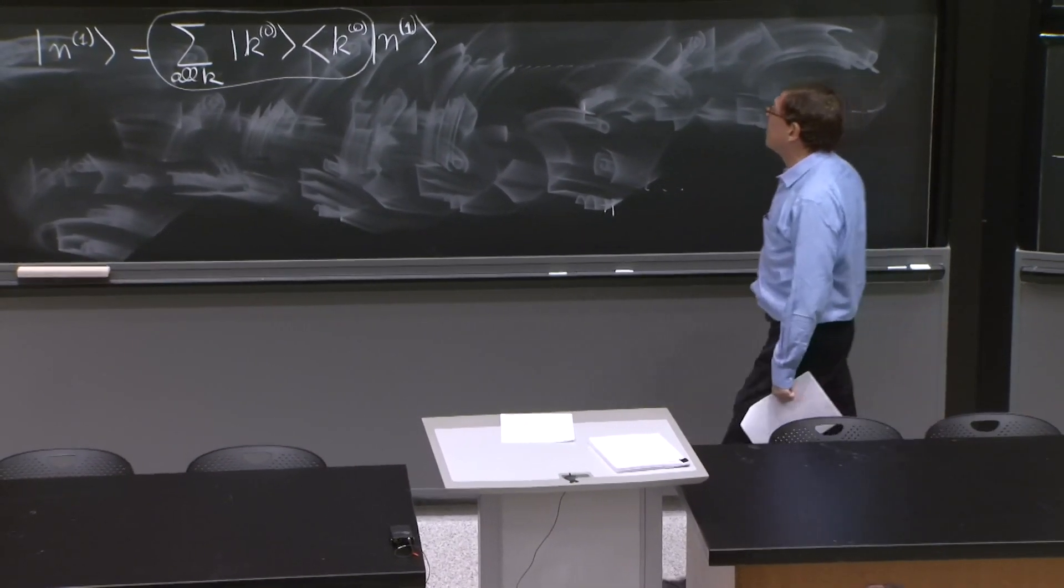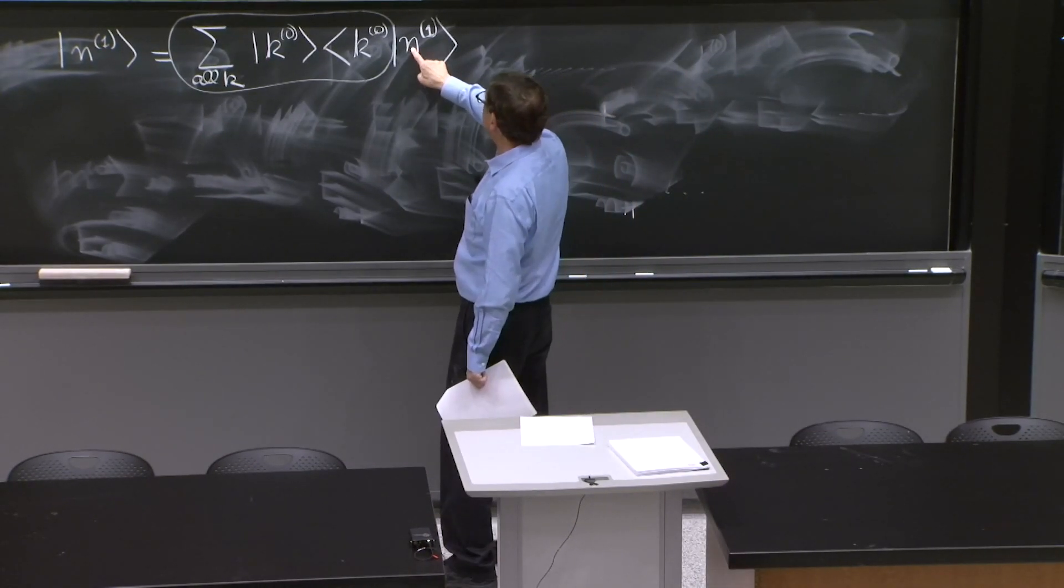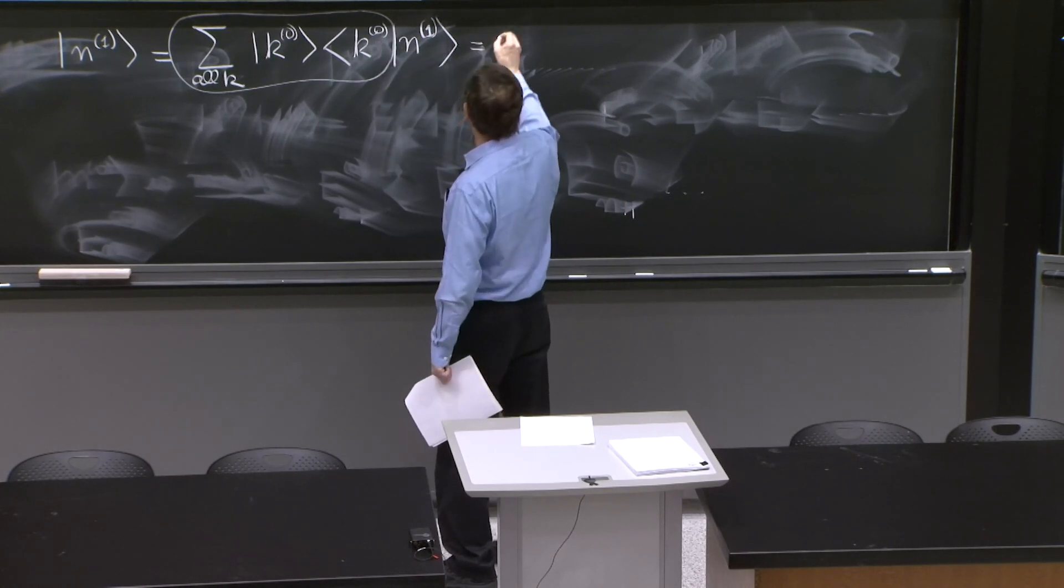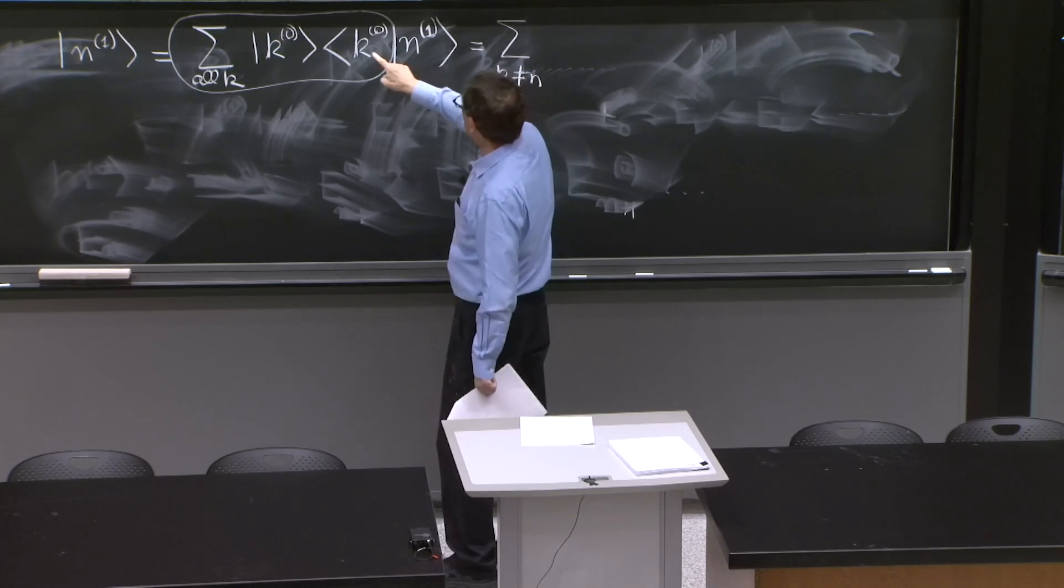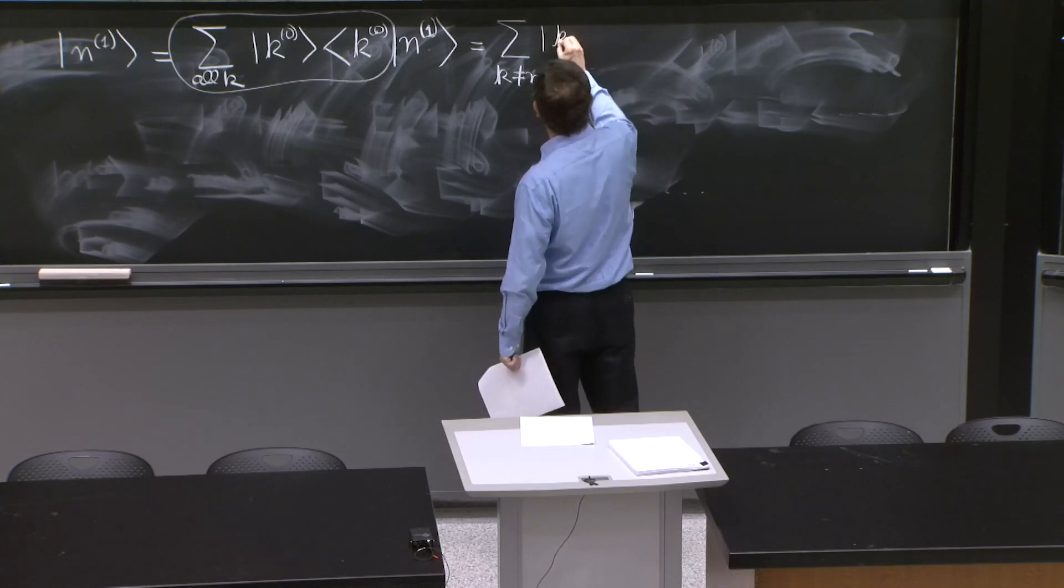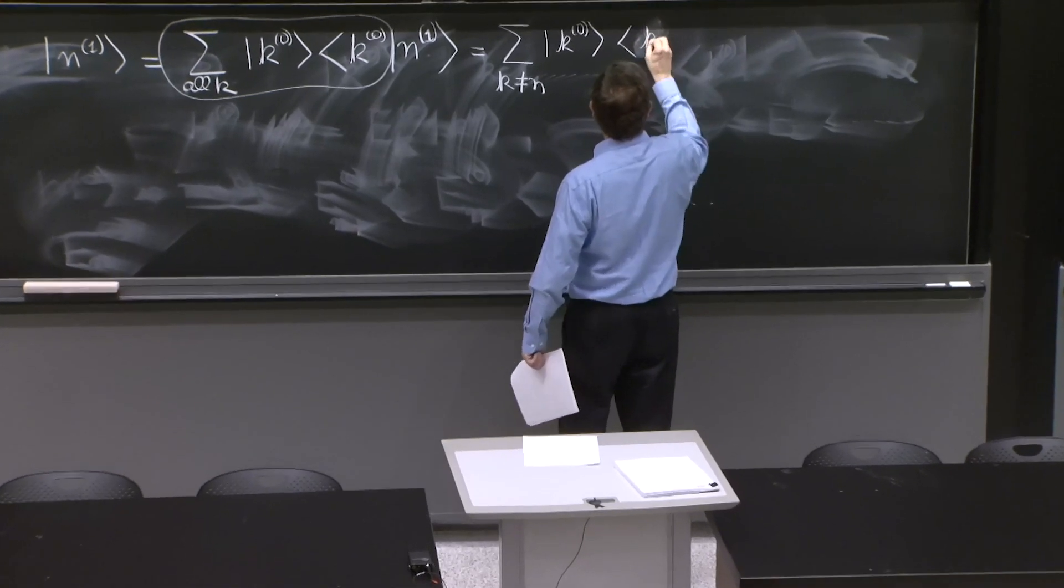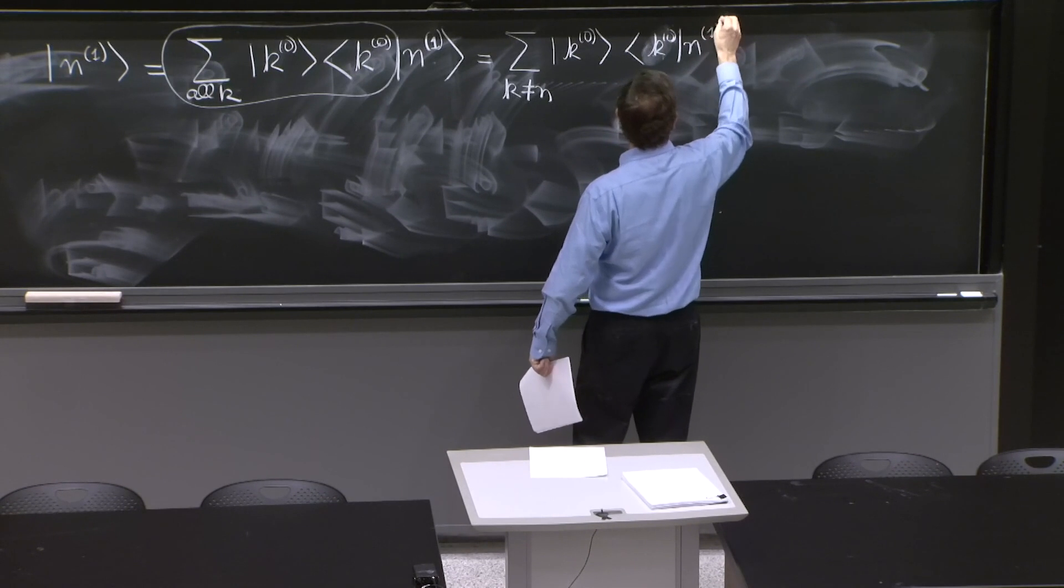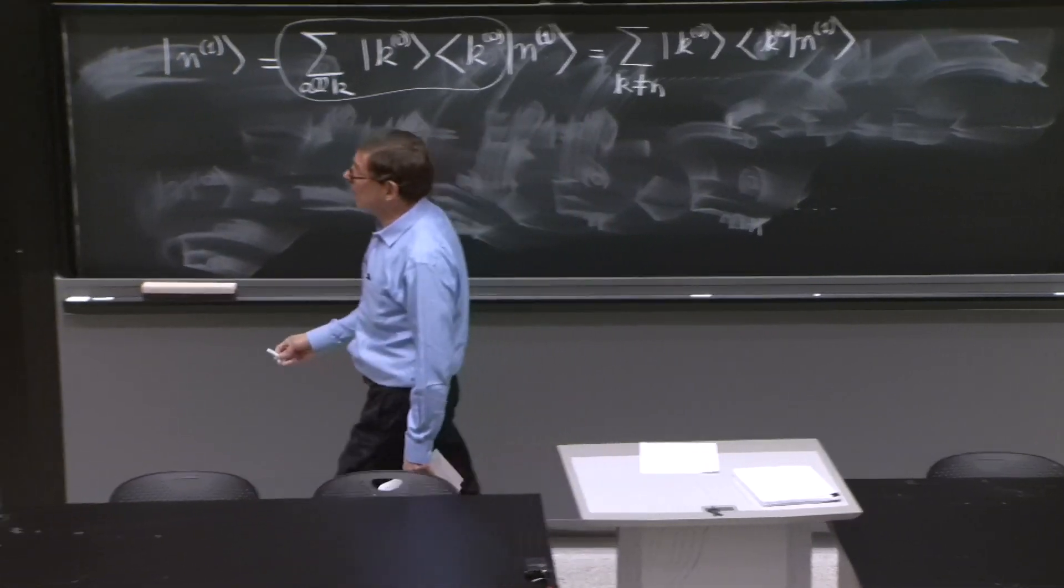You can always do that. And now you know that the state n1 is orthogonal to n0. So this becomes the sum over k different from n, because for k equal to n, these are orthogonal. You know, of k0, k0 n1.